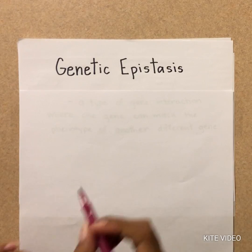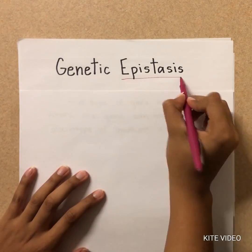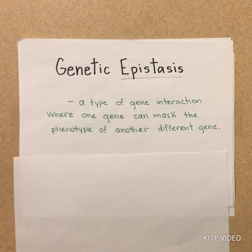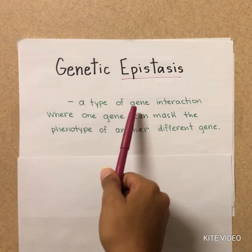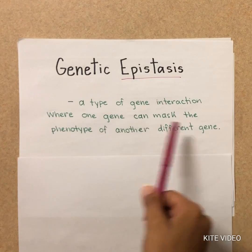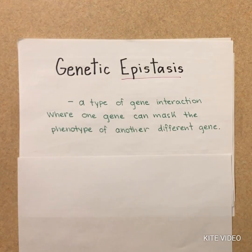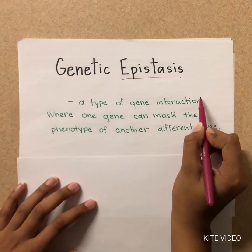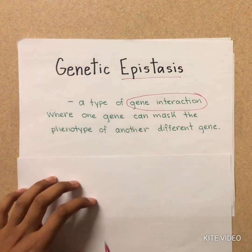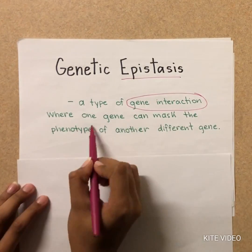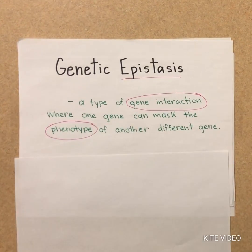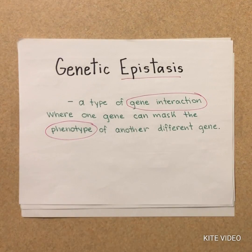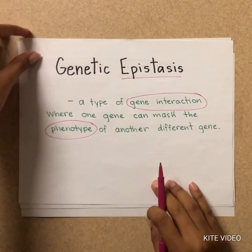The topic for this video is genetic epistasis. Epistasis is a type of gene interaction where one gene can mask the phenotype of another gene. It describes how gene interaction can affect phenotypes, or their observable characteristics, and is important in understanding selection and adaptation.